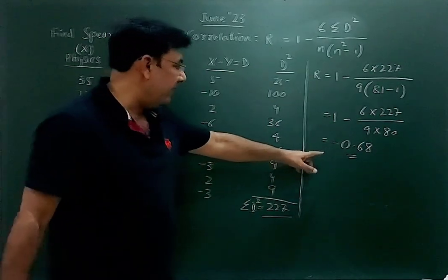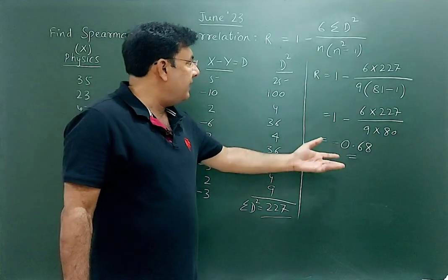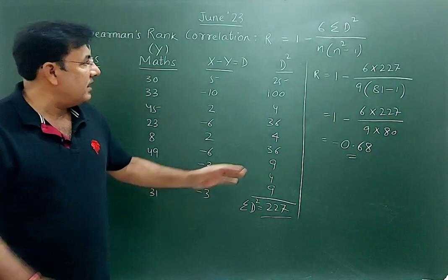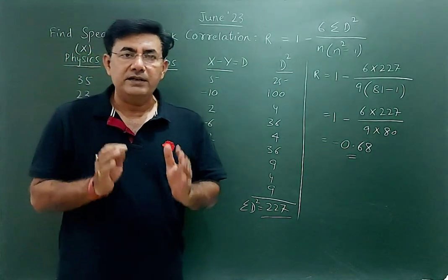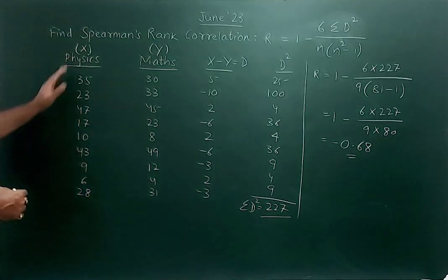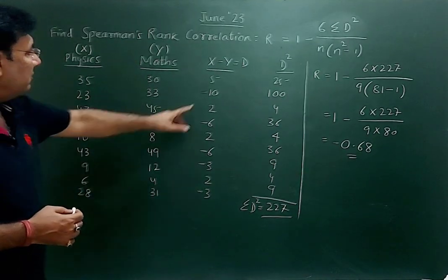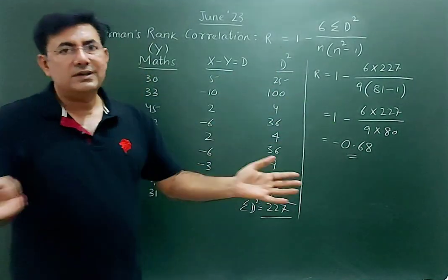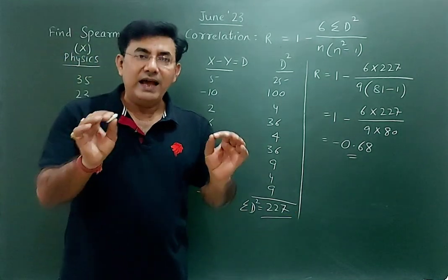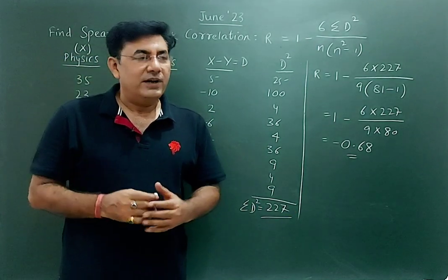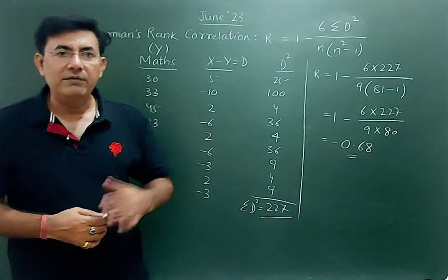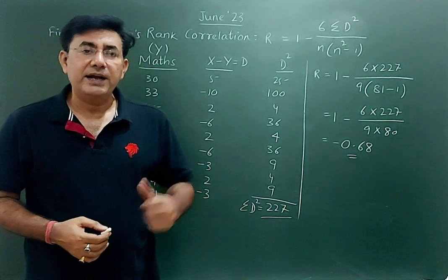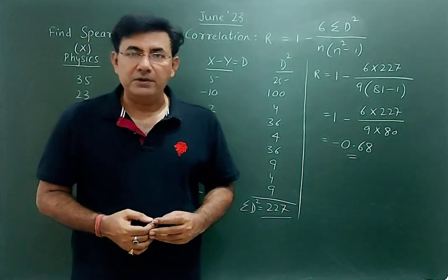The answer is approximately −0.68. The negative sign implies that the relation is negatively skewed. This is how you find Spearman's rank correlation — very simple. These two quantities are given; find the difference x minus y, square it, learn the formula, put in the values, and get the answer. It's as simple as eating a cake! That's all for this video — practice this type of question and thank you very much for watching.